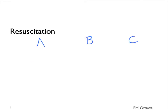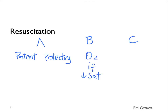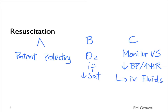Resuscitation starts with ABC. We need to make sure the patient's airway is patent and they're protecting the airway. We need to give patients oxygen if they're hypoxic. For circulation, we need to put patients on monitor to monitor their vital signs. If the patient is hypotensive or tachycardic, we need to give them crystalloids such as normal saline or Ringer's lactate. In patients who are septic because of an abdominal infection, early and aggressive IV fluids is key.